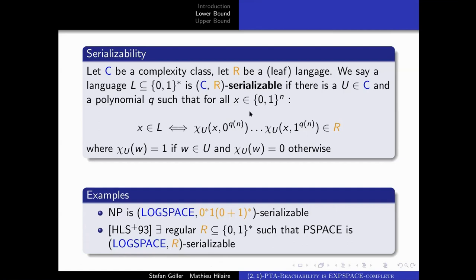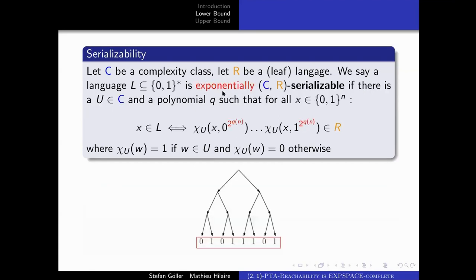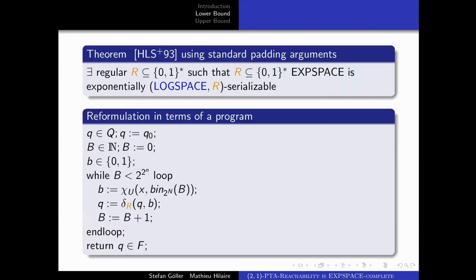This notion of serializability can be extended to guesses of exponential height. Instead of a binary tree of polynomial height, we consider a binary tree of exponential height. By a standard padding argument, the results for PSPACE carry over to EXPSPACE: if you have an EXPSPACE language, you can test membership by checking the leaves of the arborescence of a certain logspace machine and checking whether they belong to some regular language R.